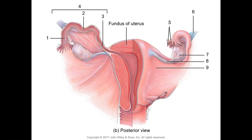The suspensory ligament is on the superior lateral side of each ovary and attaches the ovary to the pelvic wall — anatomically at the lumbar region — where the ovarian artery and ovarian veins are also located. The fallopian tubes, also known as the uterine tubes or oviducts, start laterally in a wide, funnel-shaped infundibulum that has finger-like projections at its terminal end known as the fimbriae. The movement of the fimbriae encourages the oocyte released by the ovary to be directed into the ovarian duct.